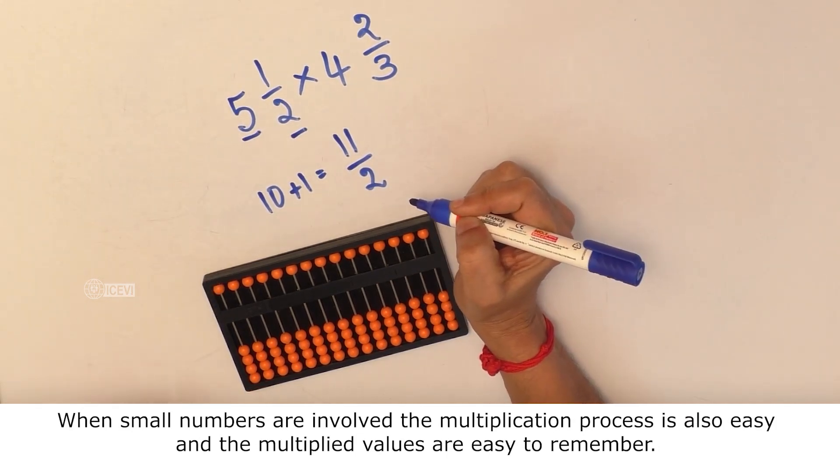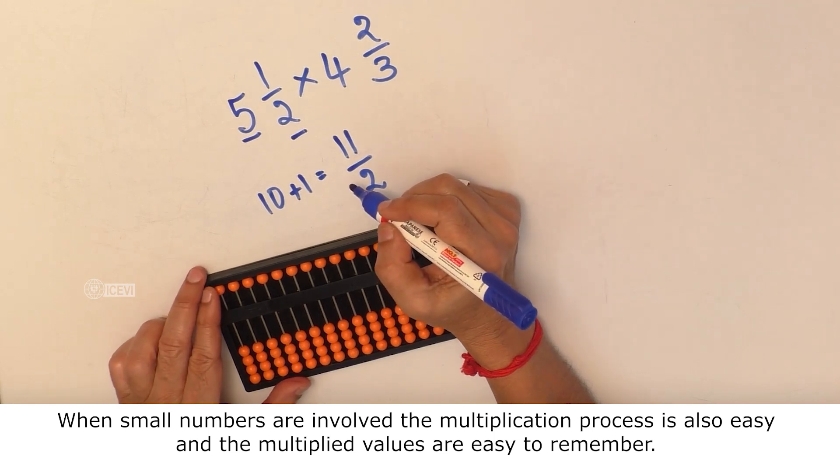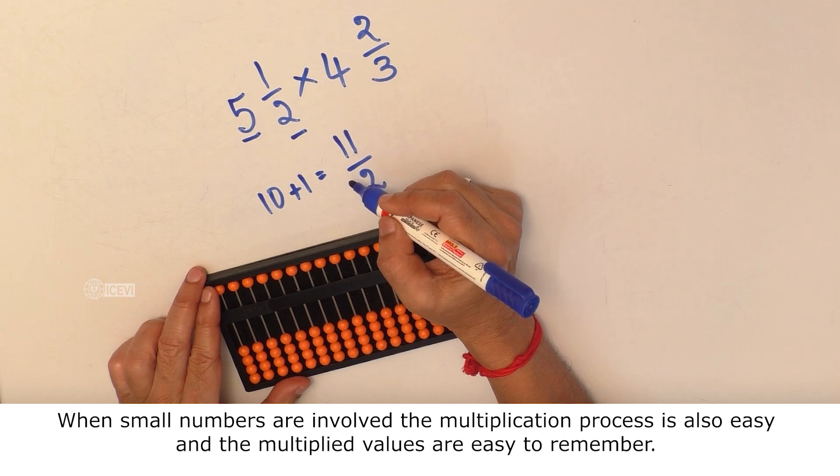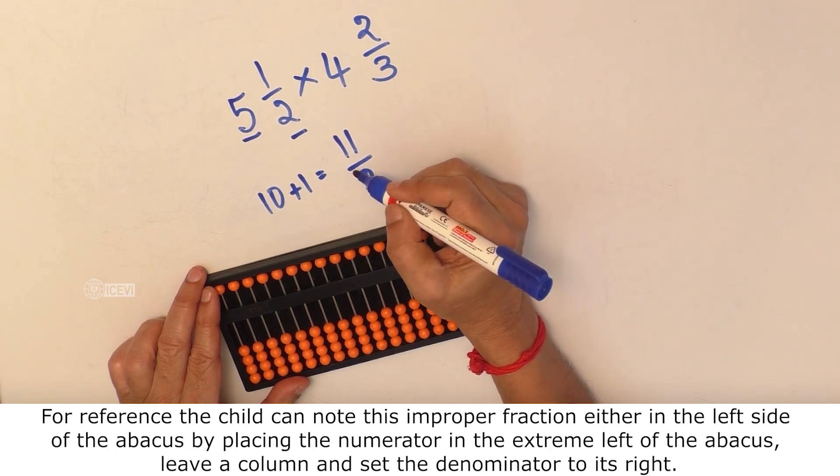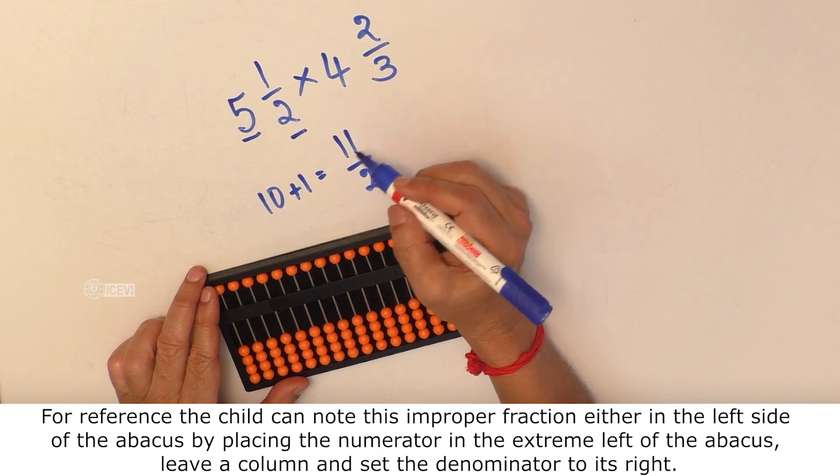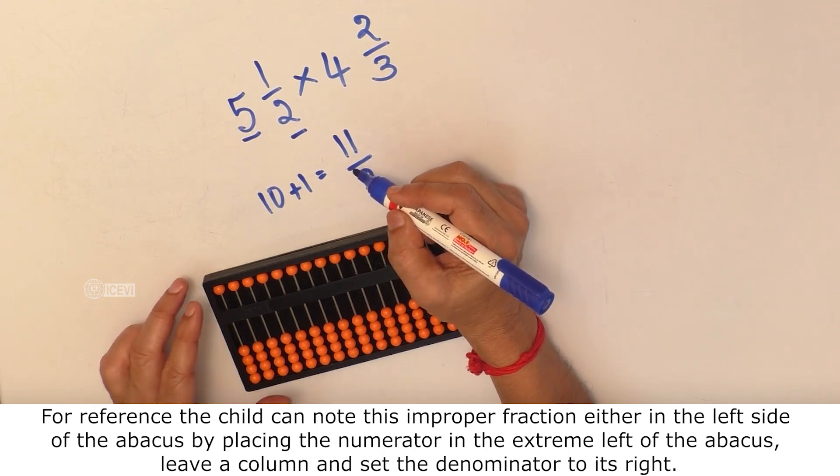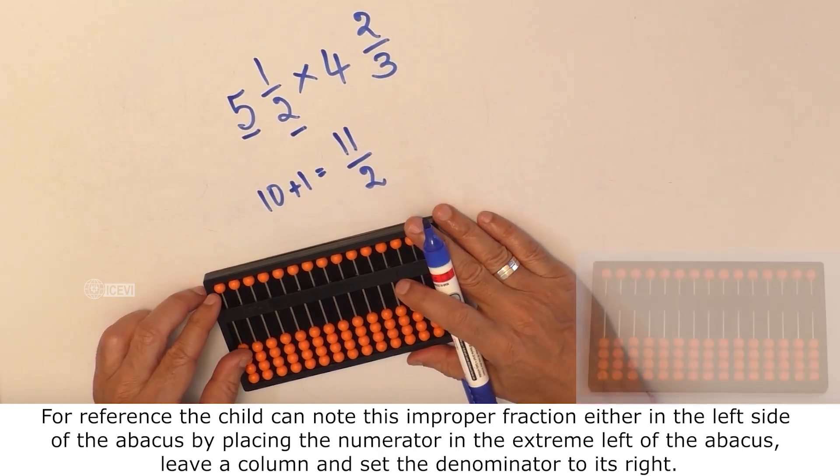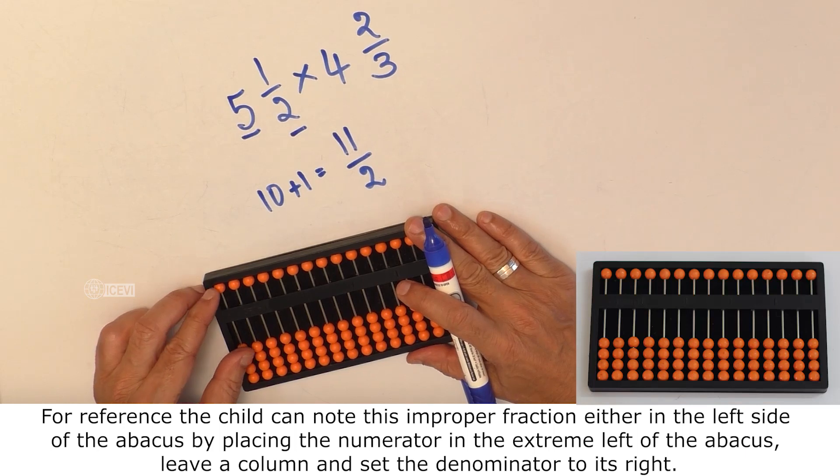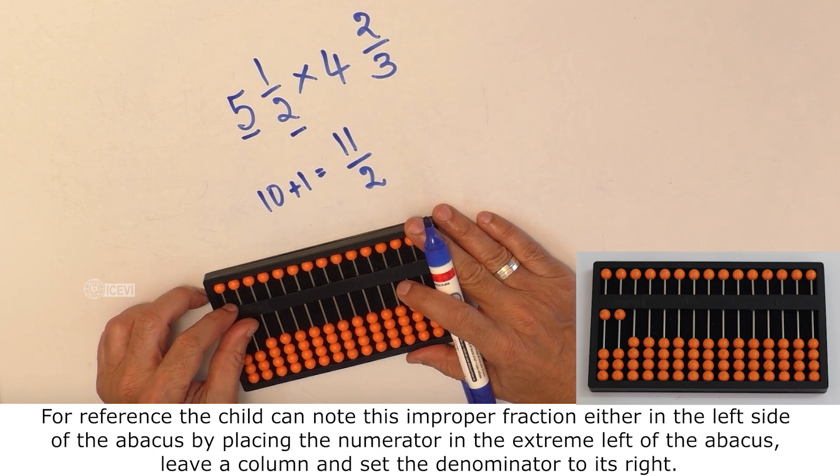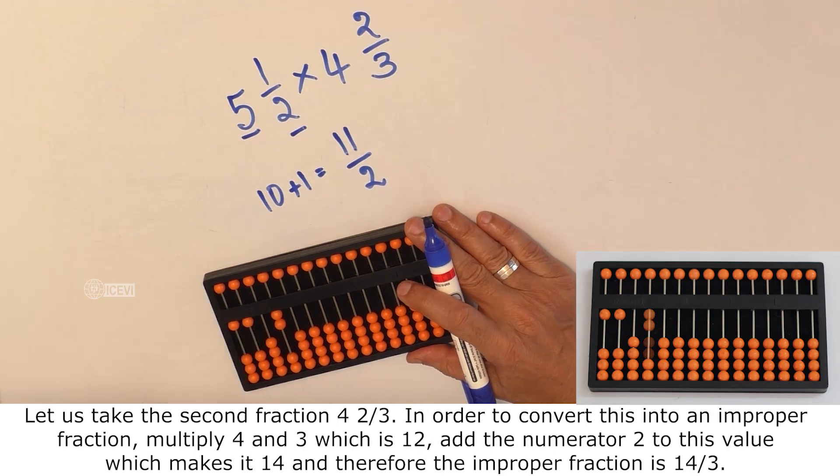For reference the child can note this improper fraction either in the left side of the abacus by placing the numerator in the extreme left of the abacus. Leave a column and set the denominator to its right. Let us take the second fraction 4 2/3.